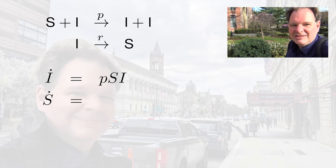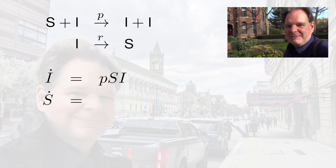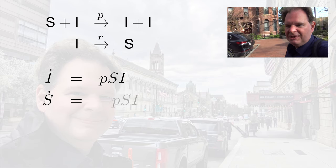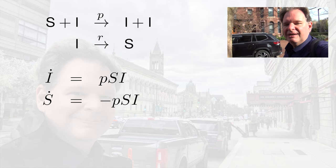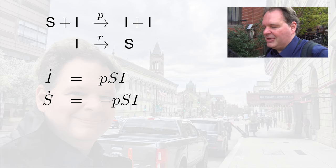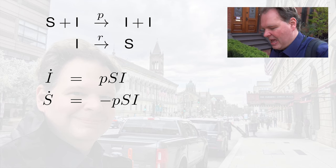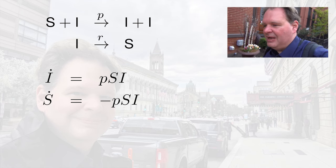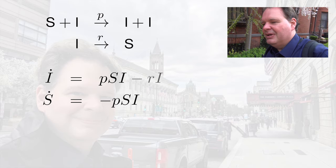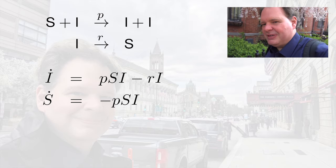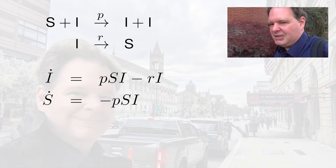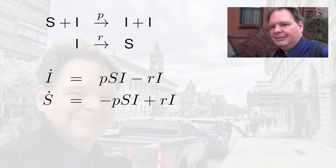If I now consider the same process from the perspective of the susceptible, I get the same term, but the change in the number of susceptibles is minus one. So for the susceptible, this process contributes −p·s·i. We can do the same for the second process. Here the rate is r, but the total rate at which it runs is r·i. If this process runs once, the number of infected will change by minus one, so the term for the infected is −r·i. For the susceptibles, the total rate is r·i but the change in susceptibles is plus one, so the term is +r·i.